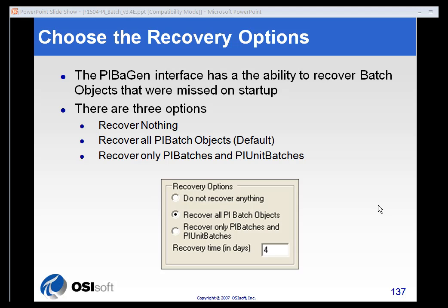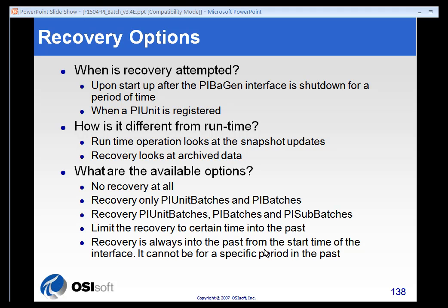It's a good idea that when you're setting up your batches, at least at the beginning, to look at the different recovery options and pick what's best for your situation. You have three options. You can either recover nothing — that simply means when the interface stops and then restarts, it will just start up new and will not pay attention to recovering anything. Or you can recover everything at the batch, unit batch, and sub-batch level, which is the default. Or you can recover only PI batches and unit batches. The default time is four days, which is just a random number we picked — it may or may not work for you.